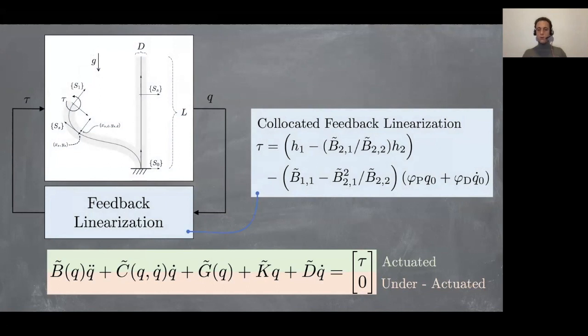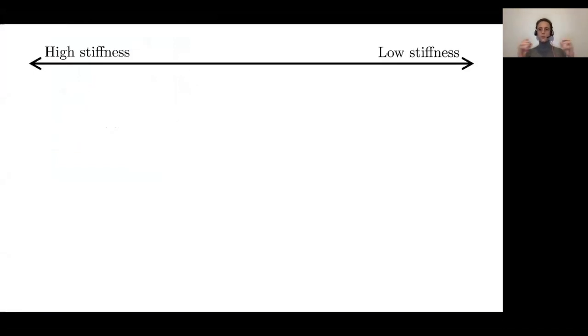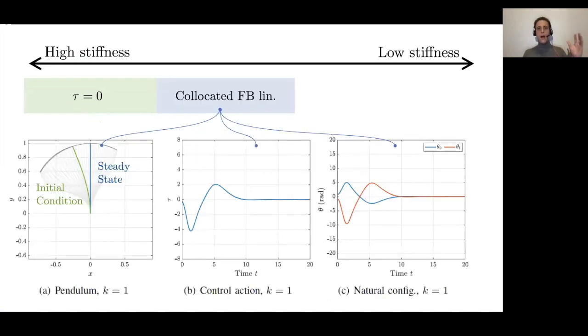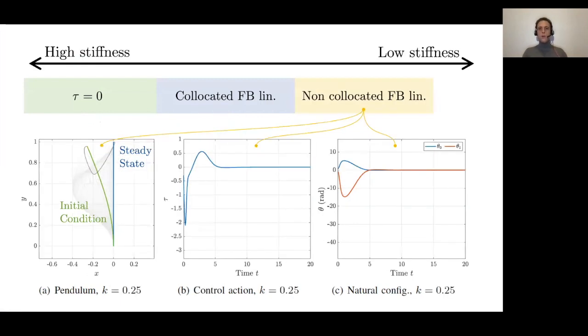We tried both collocated and non-collocated feedback linearization. What comes out analytically is that the behavior depends on the stiffness of the material. For low stiffness, the unstable equilibrium, which is the vertical one, is asymptotically stable without the need of any controller. There is then an area of medium stiffness in which the equilibrium is unstable and can be stabilized by means of collocated feedback linearization.